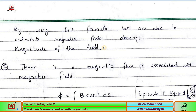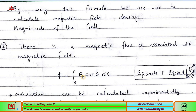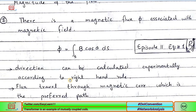Step two: there is a magnetic flux associated with the magnetic field. Whenever a magnetic field is generated in a coil, there must be a magnetic flux φ always associated with it. To calculate flux, the formula is φ = B·A·cos θ — the surface area formula — specifically the integral: φ = ∫ B cos θ dS, from episode 11 equation 1. Using this, we can calculate how much magnetic flux is generated. The direction can be calculated experimentally.